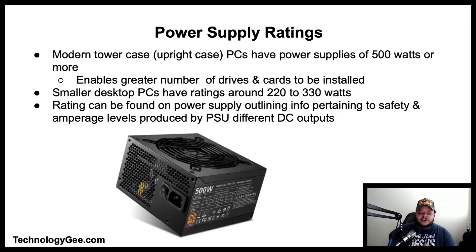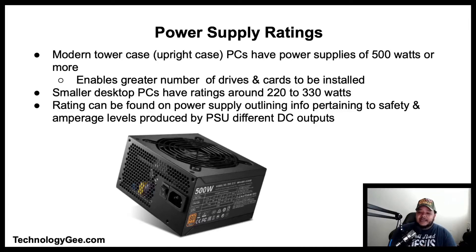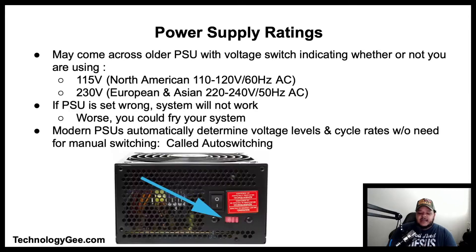Modern tower cases or upright case computers typically have power supplies of 500 watts or more, which enables them to support a greater number of drives and cards. Smaller desktop computers have ratings of around 220 to 330 watts. The power supply rating can be found on the label of the power supply, which outlines information pertaining to safety and amperage levels produced by the power supply's different DC outputs.